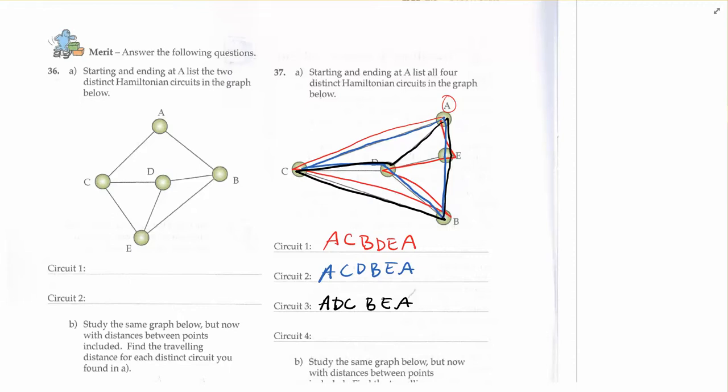If I look for another one, if I were going to go to D first, I do have an option here that I can go from A to D to E, B, C, and back up to A. Let's look at that. A, E, B, C, A.